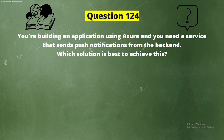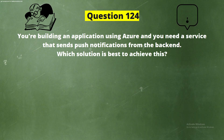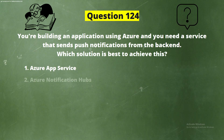Question 124. You are building an application using Azure and you need a service that sends push notifications from the backend. Which solution is best to achieve this? And the options are: Option 1, Azure App Service. Option 2, Azure Notification Hubs.